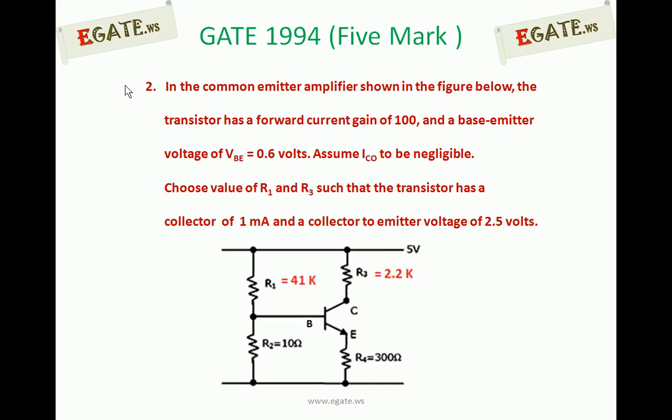The answers for this question are: R1 is around 41 kilo ohms, R3 is around 2.2 kilo ohms. We'll see how to solve.